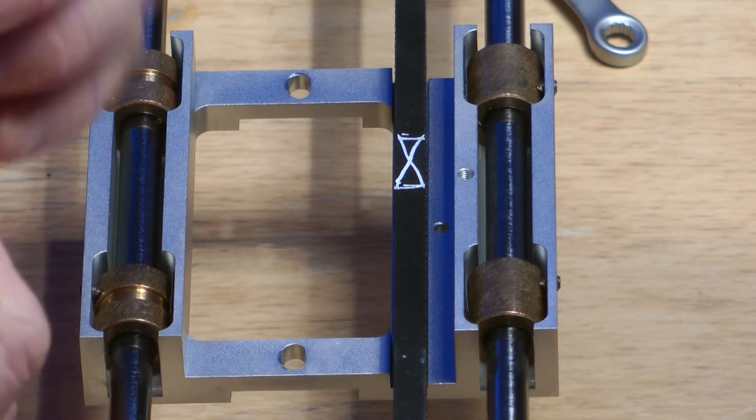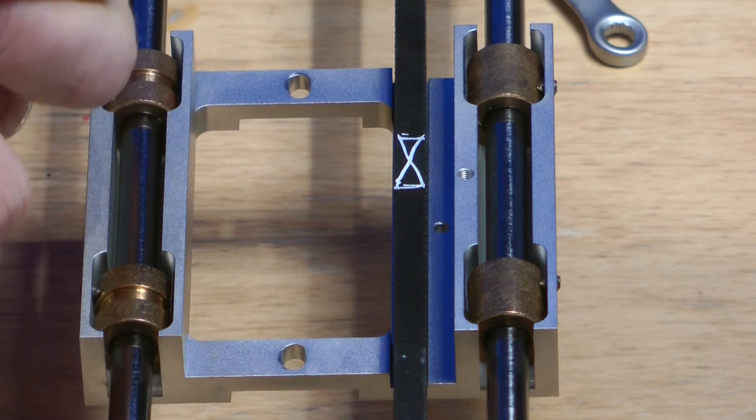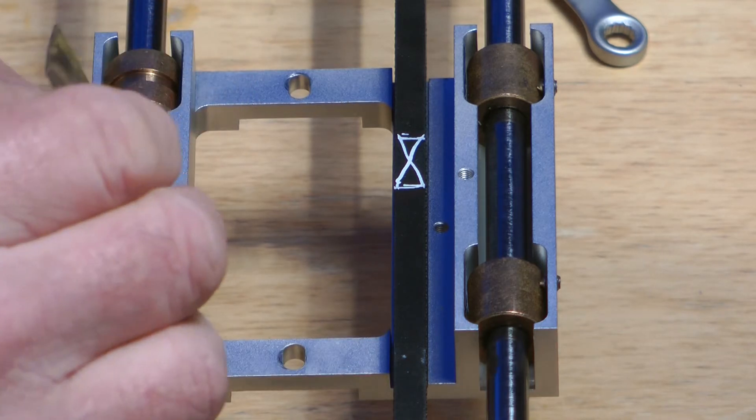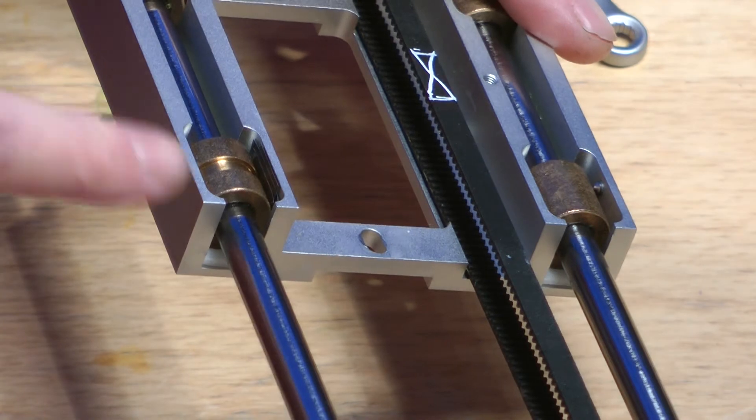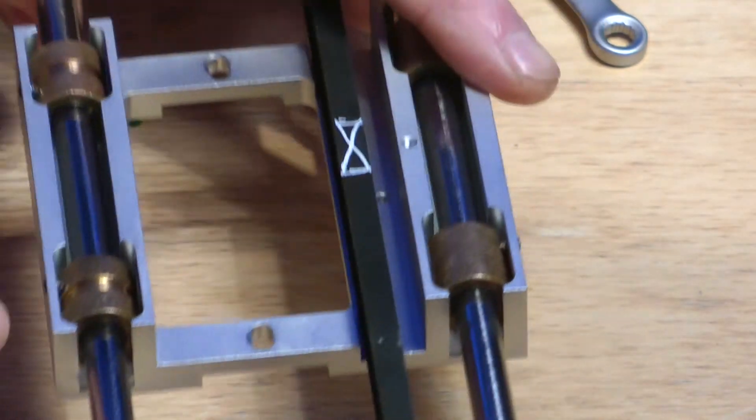And I ended up putting four pieces of this, about, I don't know, about 10 mil square, probably maybe 13 mil square pieces in there. I don't know whether you can just make them out. Just on the back surface, opposite the grub screw.